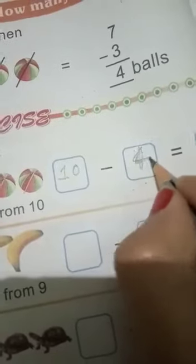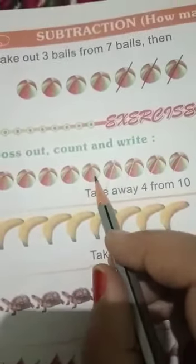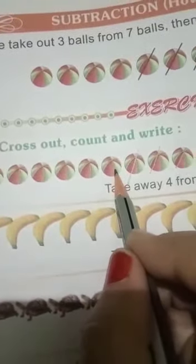Now count: 1, 2, 3, 4, 5, 6. Six balls means your answer is 6. 10 minus 4 is equal to 6.